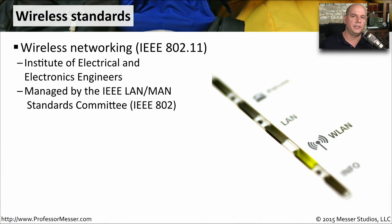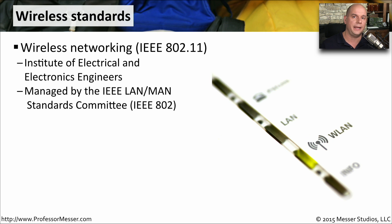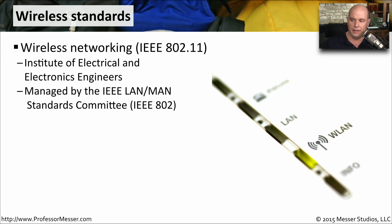You'll always hear wireless networks referred to as 802.11 networks. That number comes from the Institute of Electrical and Electronics Engineers, or the IEEE, and it's associated with the IEEE Standards Committee 802. They created the 802.11 standard to determine what standards should be used for wireless networking.